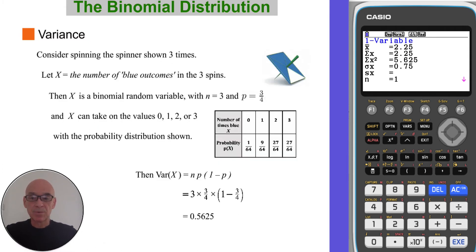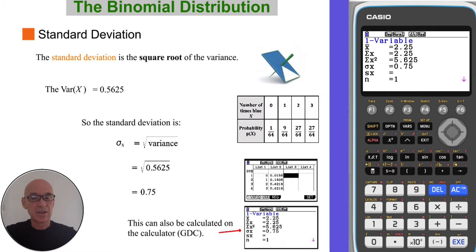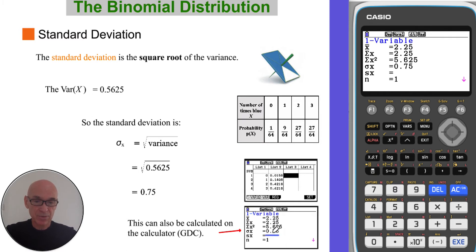So in the example, we can calculate the variance by multiplying n by p by 1 minus p — in other words, 3 for n, multiplied by p which is 3 quarters, multiplied by 1 minus 3 quarters. So the variance is equal to 0.5625. And then to find the standard deviation, we need to square root the variance. The variance was 0.5625, so if we square root that, we get 0.75. You can also see that the standard deviation is shown on the calculator as 0.75.